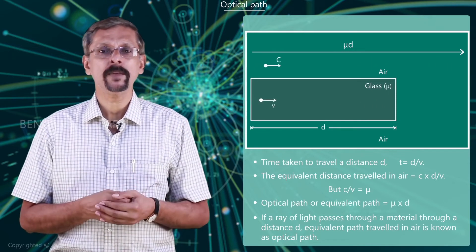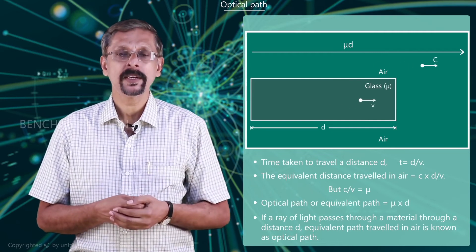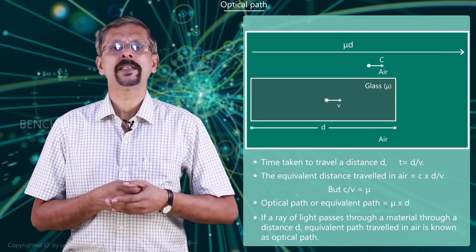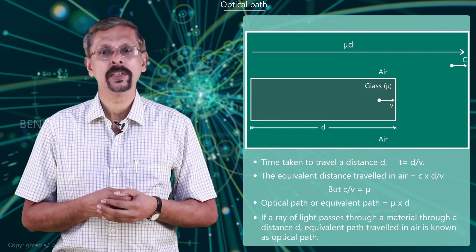then the equivalent path travelled in air is what is known as the optical path. It is given by the product of the refractive index of the material and the distance travelled by light through the medium.